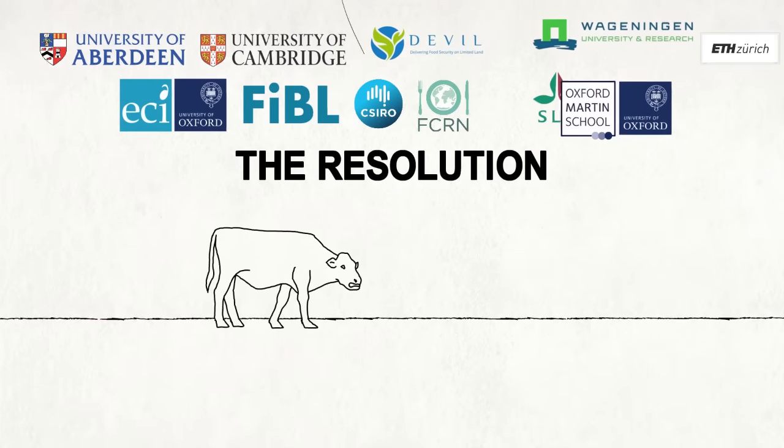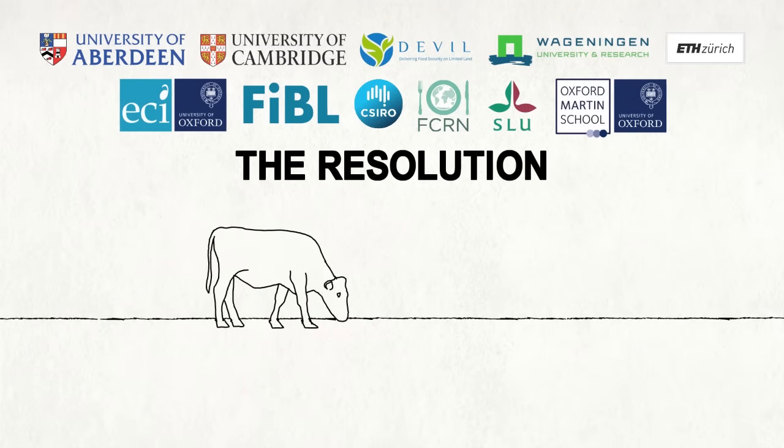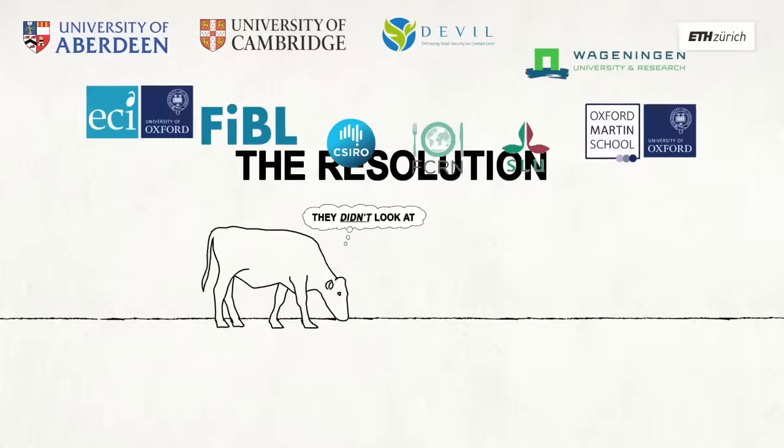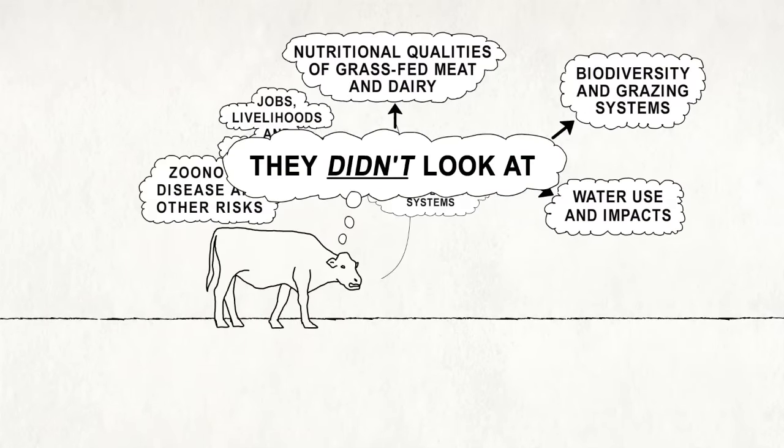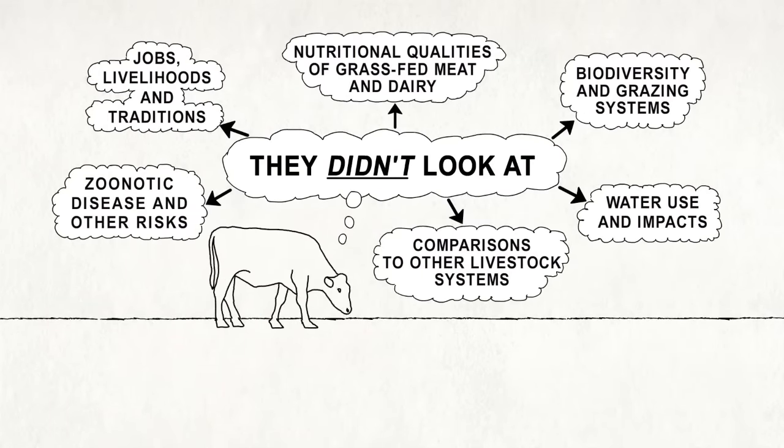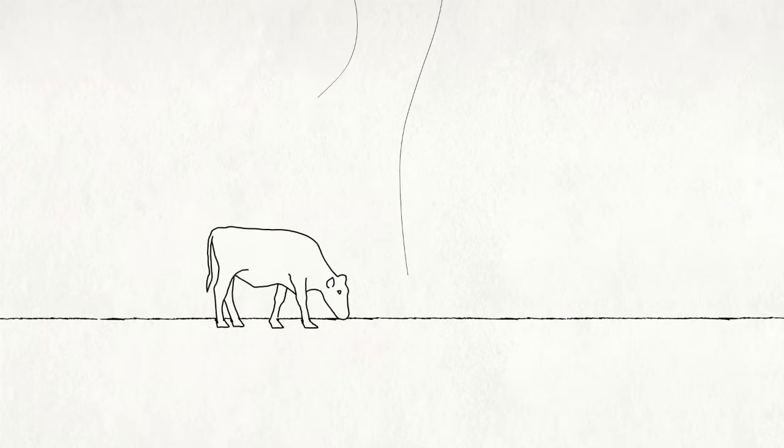To address these questions, an international group of researchers came together to provide answers. It's important to note that there are many social, ethical and environmental issues to think about when considering grass-fed livestock's role in a sustainable food system.